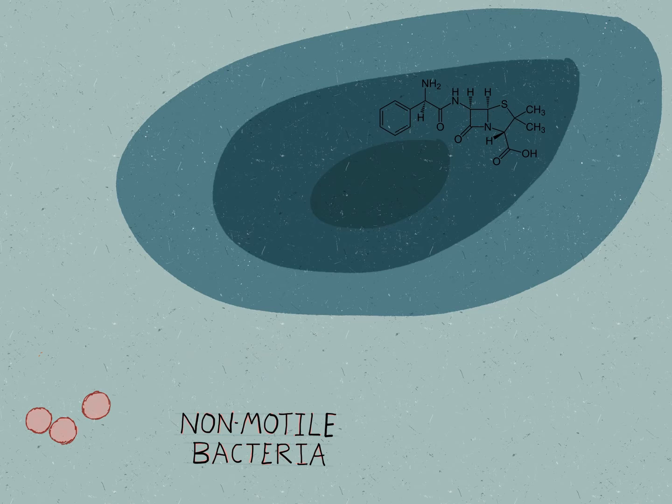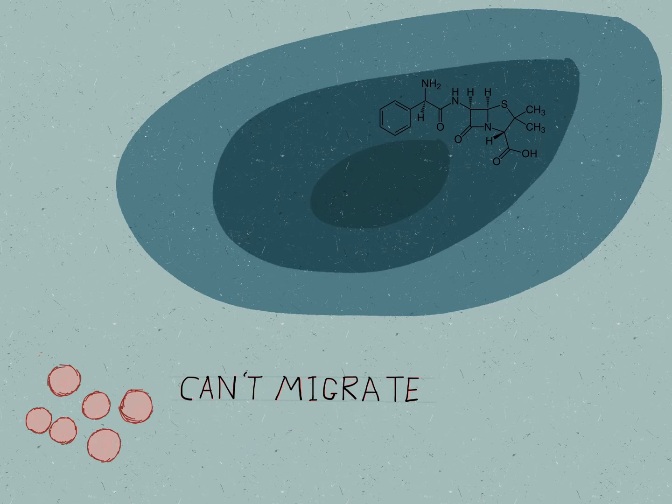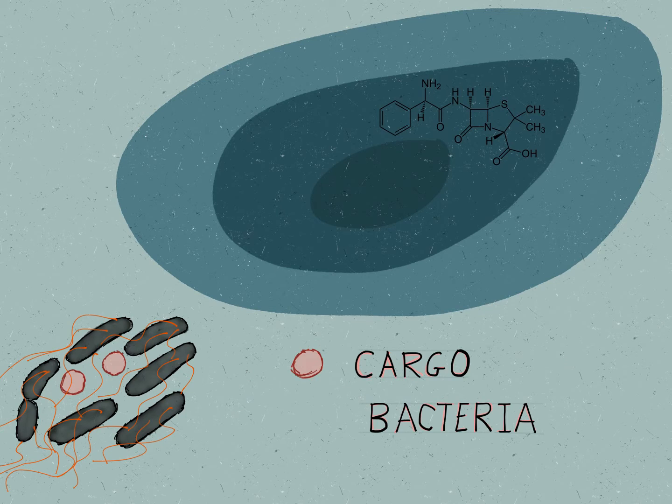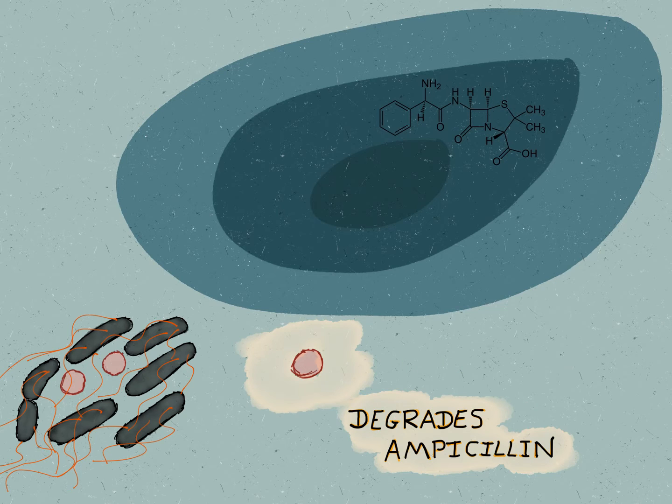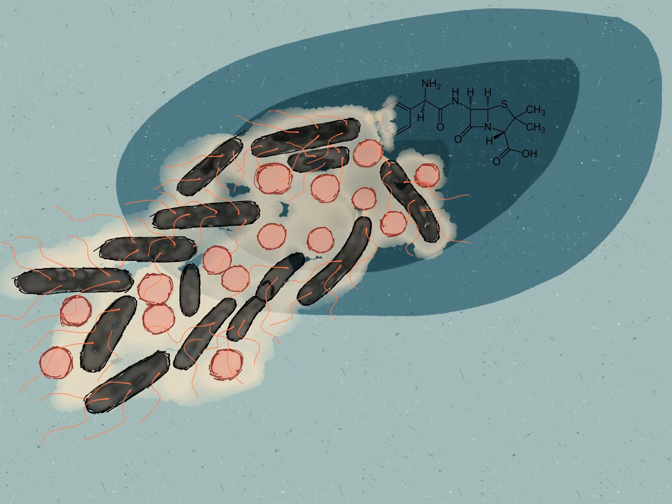Let's consider a second scenario. In this case we have a non-motile bacterium. This obviously can't migrate. So neither organism can succeed alone. Let's now inoculate a mixed population of the bacteria. The cargo bacterium which can degrade the antibiotic and the P. Vortex. In this case the combination of the two microorganisms succeeds where the individual failed.